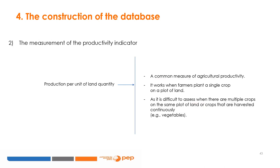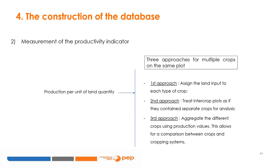After the choice of analysis units and selection of respondents is done, we define the productivity indicator. It could be the amount of production per unit of land — a common measure of agricultural productivity. This measure works when farmers plant a single crop on a plot of land, but when there are multiple crops on the same plot or crops that are harvested continuously, it does not work well. When using production per unit of land, there are three approaches for multiple crops: assign the land input to each type of crop; treat inter-crop plots as if they contain separate crops for analysis; or aggregate the different crops using production values, which allows for comparison between crops and cropping systems.